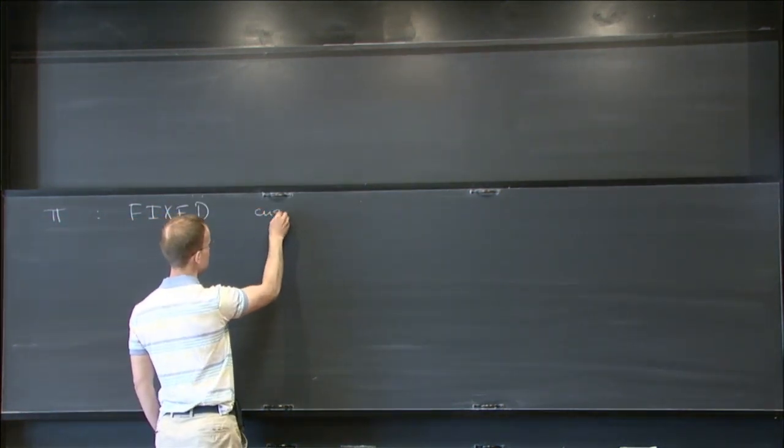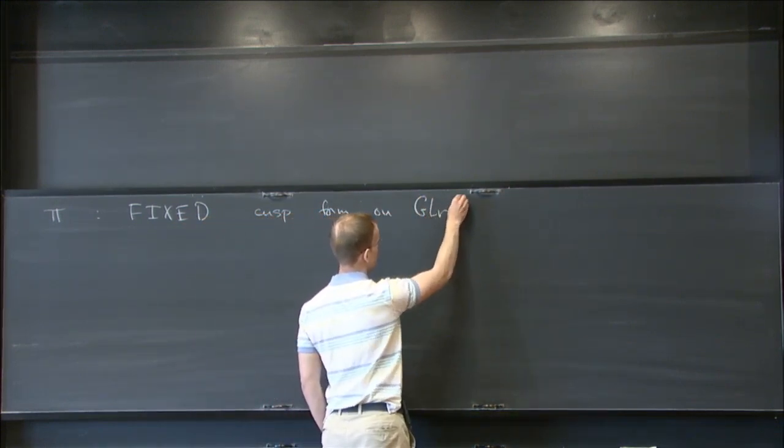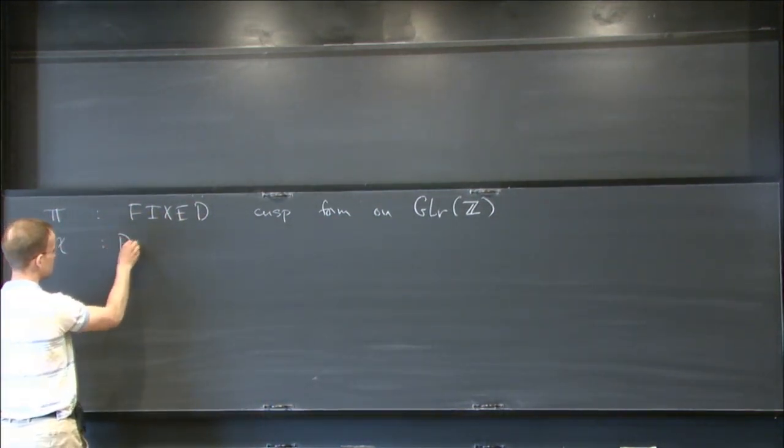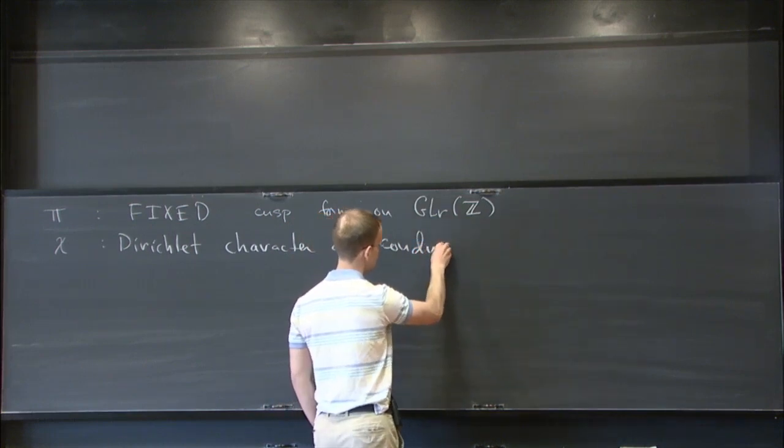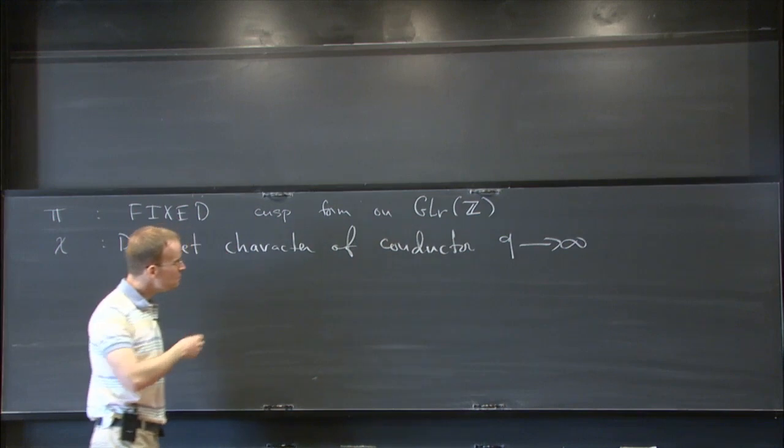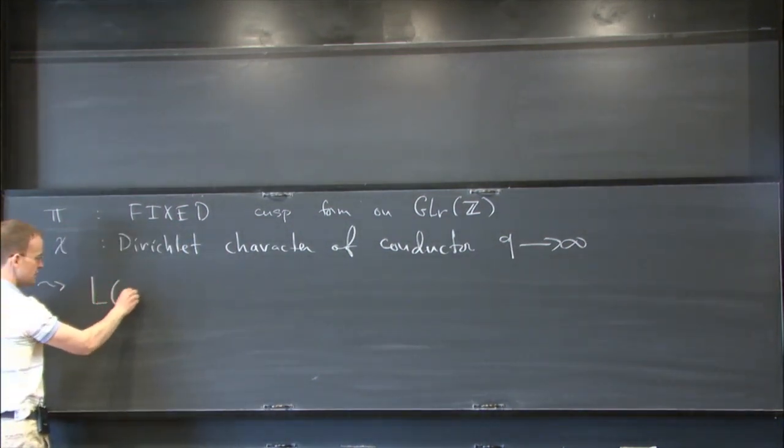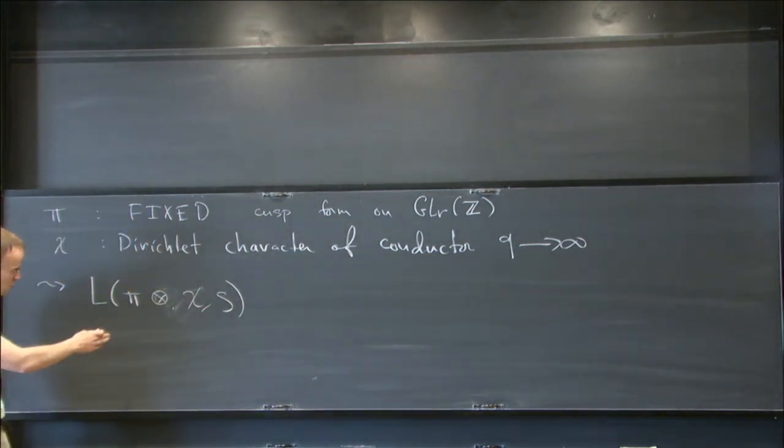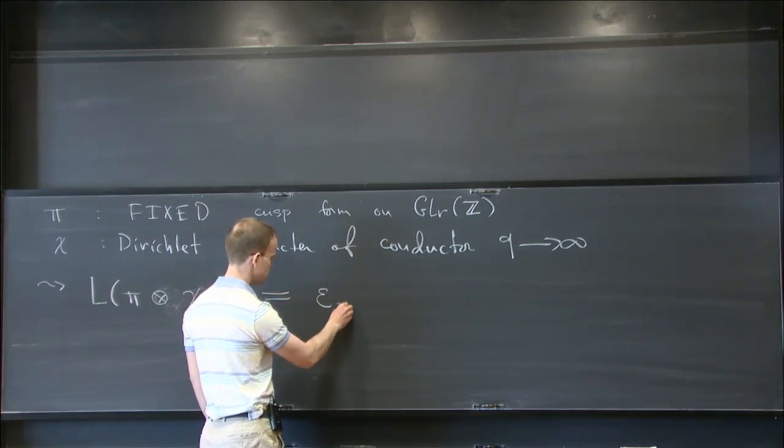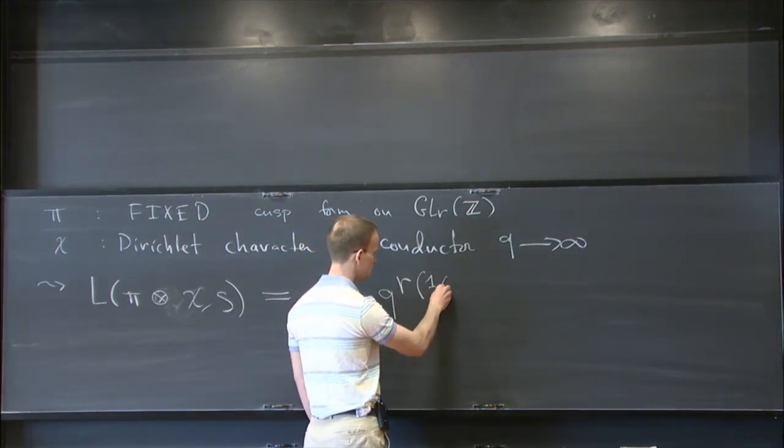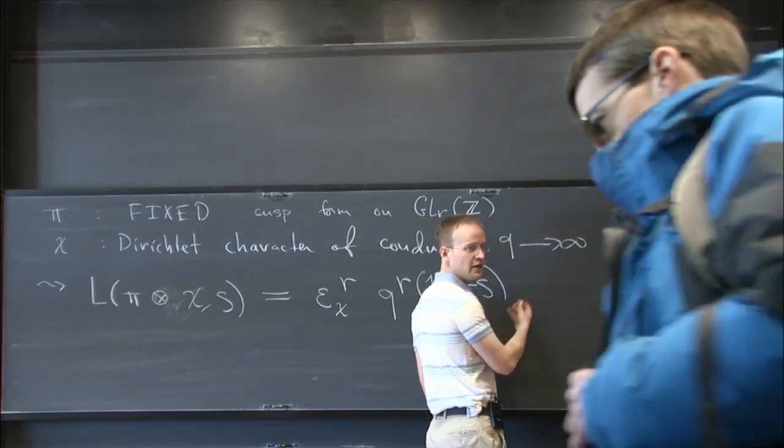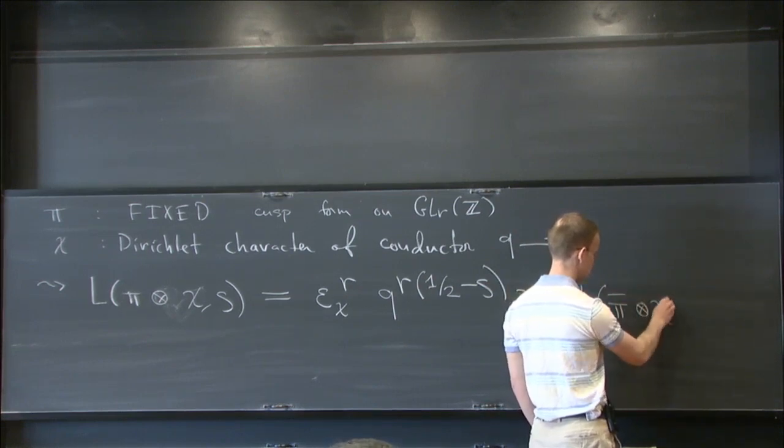So pi will be a fixed cusp form on GL_r of z, and chi will be a Dirichlet character of some conductor going off to infinity. We can attach the function L pi tensor chi s, which will satisfy a functional equation under the substitution s goes to 1 minus s.